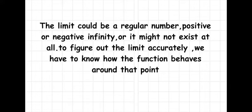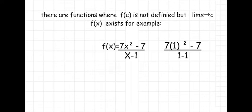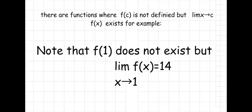The limit could be a regular number, positive or negative infinity, or it might not exist at all. To figure out the limit accurately, we have to know how the function behaves around that point. For example, f(x) equals (7x² minus 7) over (x minus 1). When we substitute x equals 1, the answer is undefined. So let's solve for the limit of f(x) as x approaches 1. Note that f(1) does not exist, but the limit of f(x) as x approaches 1 equals 14.